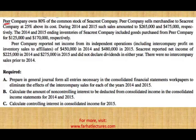P Company owns 80% of the common stock of S Company, so we have a parent and a subsidiary. P Company sells merchandise to S Company — this is a downstream sale, going from P to S, downstream. We also have upstream sales, which are two different things; we'll work on upstream later.